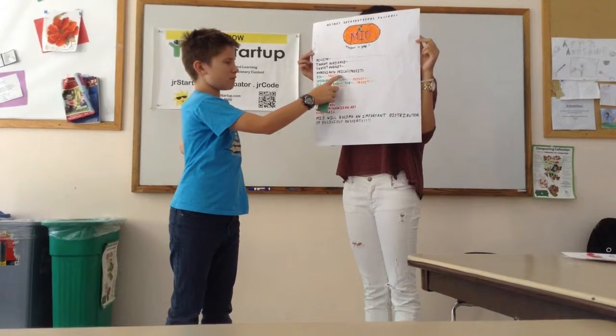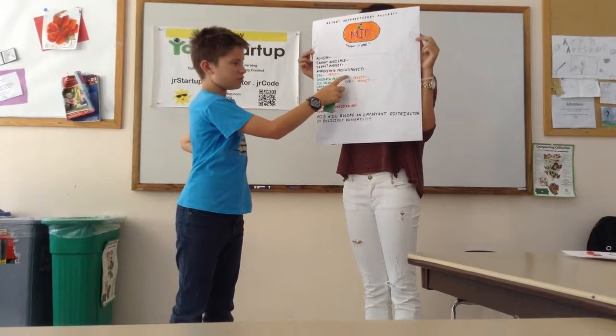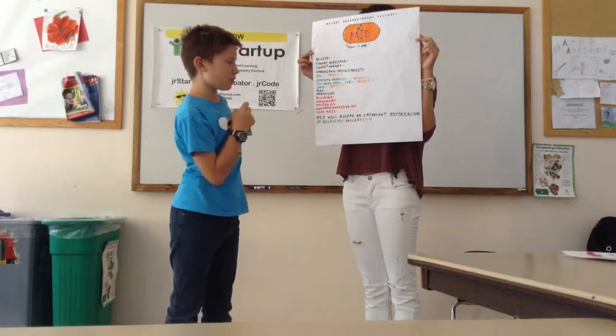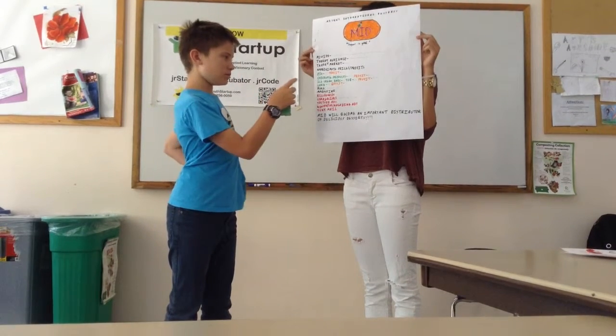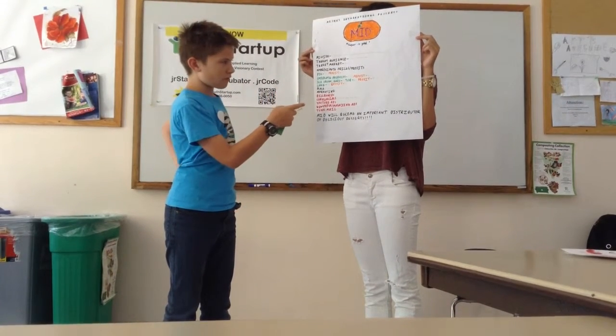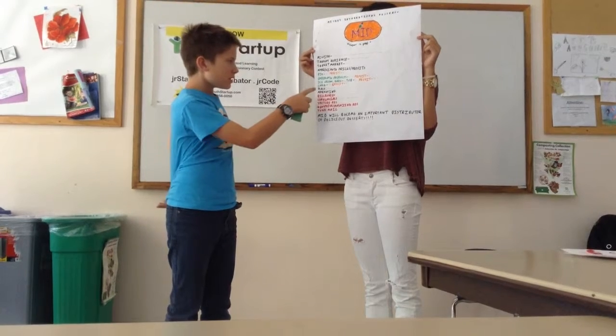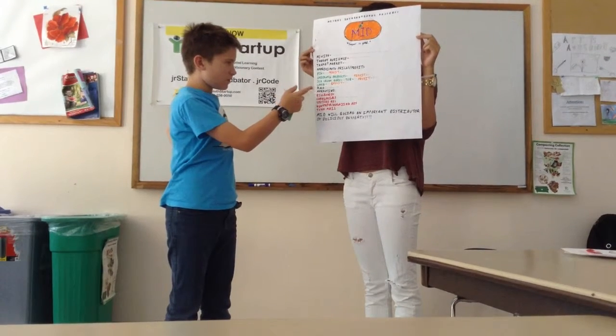The pie will be $5 and the profit is $3. Chocolate products will be $2 to $3 and the profit will be $1 to $2. Ice cream bars will be $2 and the tub will be $5, and the profit will be $1 to $4. Cake is $5 and the profit is $3.